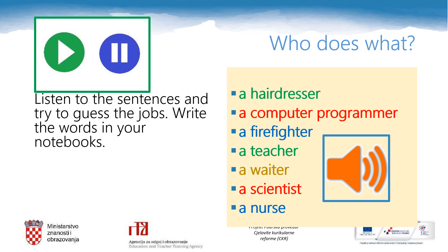Number 5: It is a person who fixes computers. Number 6: It is a person who does scientific research. Number 7: It is a person who serves food or drinks in a restaurant or a coffee shop.